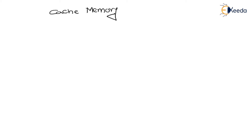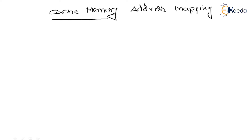We are going to discuss about cache memory address mapping techniques. Let us understand what this topic is all about. I will demonstrate this topic by taking the simplest example to make it completely comfortable. So here let us define our memory system.